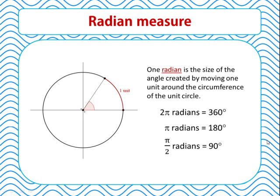Before we go too much further, we need to make sure that we're clear about radian measure. Radian measure is simply another scale or unit that we use to measure angles — we can measure angles in degrees and also in radians. One radian is defined as the size of the angle created by moving one unit around the circumference of the unit circle. Since the unit circle has a circumference of 2π units, there are 2π radians in one full rotation, meaning 2π radians is equivalent to 360 degrees. This ratio is all you need to remember — the rest is fraction work.